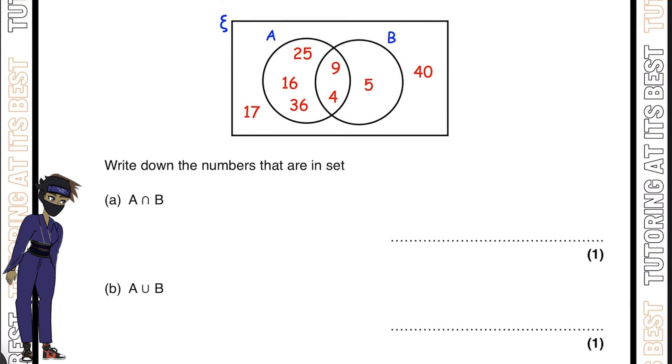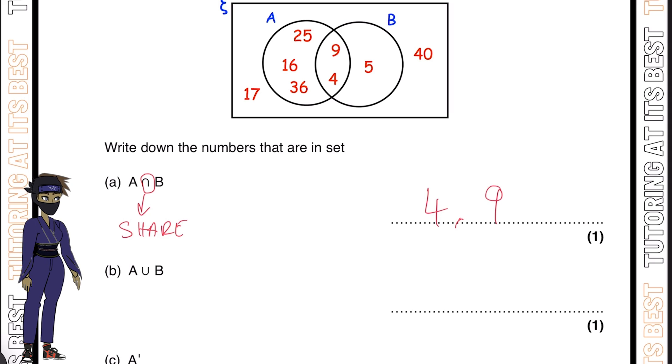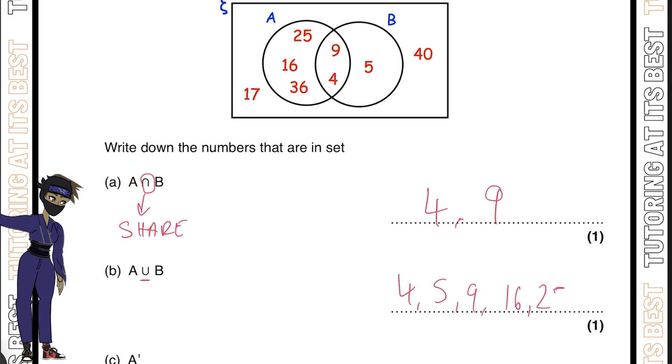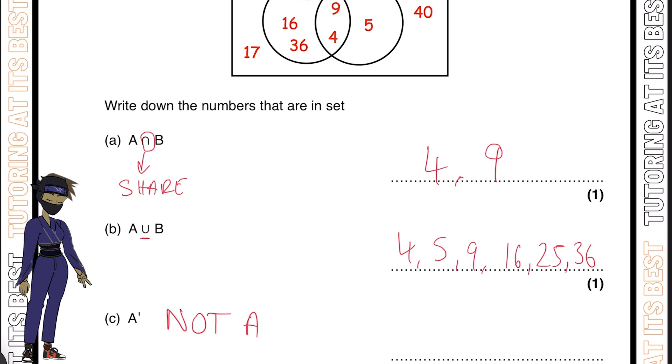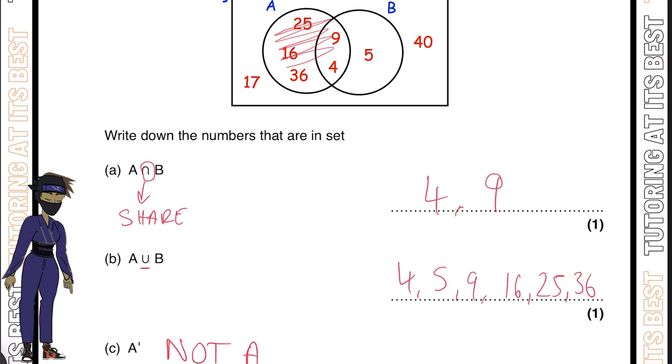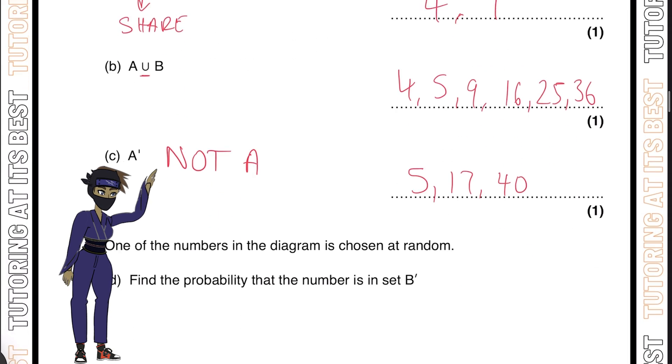Question 5: They're asking for this symbol here, that would mean intersection. What do A and B share? If you said 4 and 9, you're absolutely right. Then we'll do the opposite, which is union, everything within A and B. So we have 4, 5, 9, 16, 25, and 36. Then finally, not A, everything except for what's in A. We're left with three numbers: 5, 17, and 40.